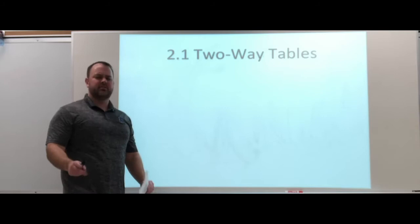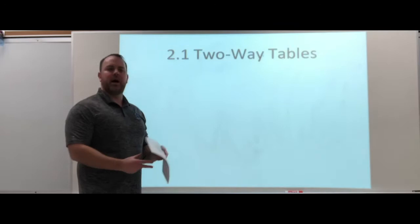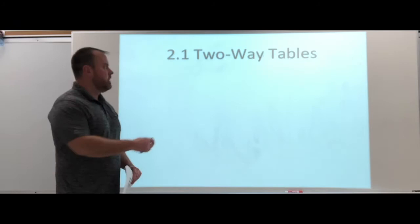Continuing with 2.1, two-way tables. What we're going to look at now is how sometimes the numbers can trick you a little bit into thinking one thing, and if you just combine some of the information, your conclusion might then be reversed.